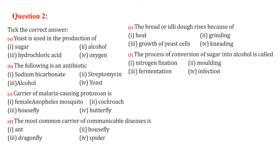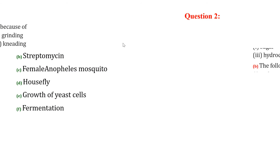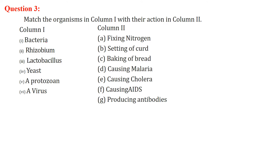Now tick the correct answer. Yeast is used in the production of alcohol. The following is an antibiotic: streptomycin. The carrier of malaria-causing protozoa is the female Anopheles mosquito. The most common carrier of communicable diseases is the housefly. The bread or idli dough rises because of the growth of yeast cells. The process of conversion of sugar into alcohol is called fermentation.